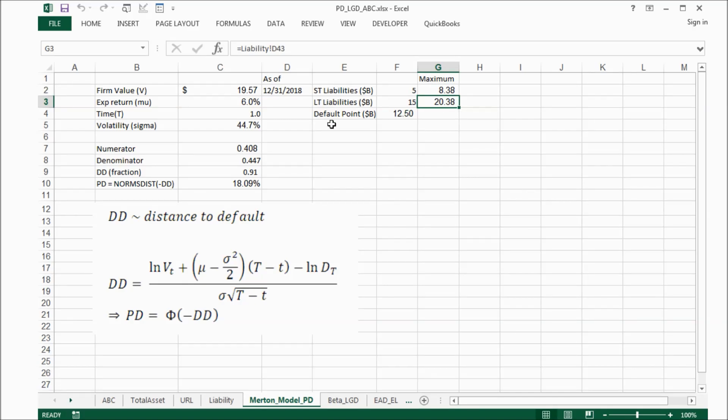say the default point depends on if the short-term liability is $5 billion. Long-term liability is $50 billion. And the default point is calculated by the 100% of short-term liability and the 50% of the long-term liability. So the default point will become $12.5 billion. That means if the company's total assets hit this point, it will default.